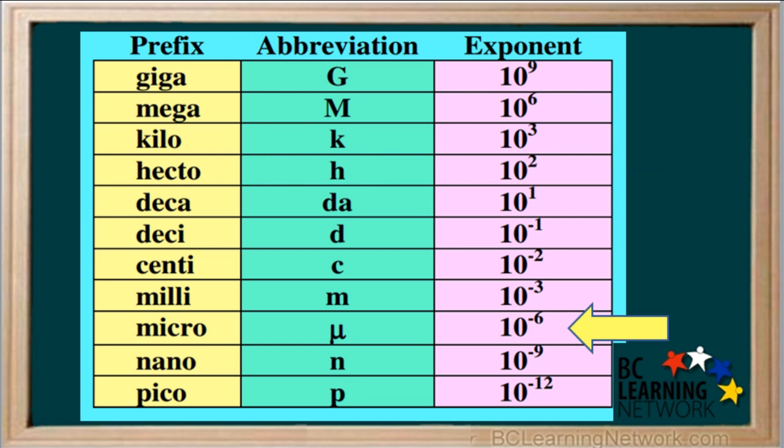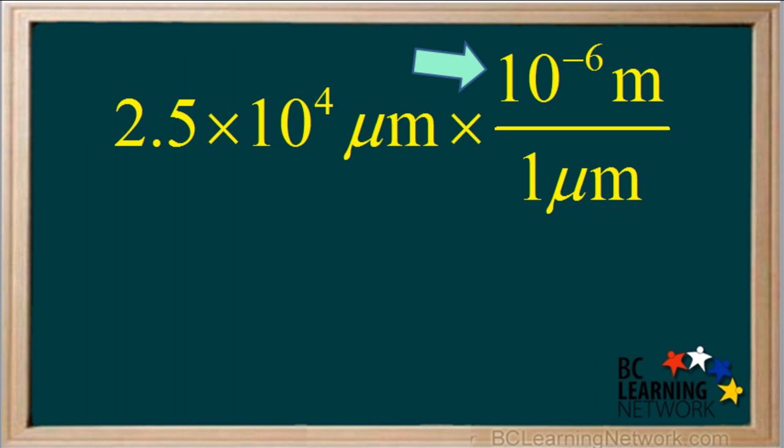We know that micro means 10 to the negative sixth. So we write 10 to the negative six beside the meters. The conversion factor is correct because one micrometer is equal to 10 to the negative six meters.